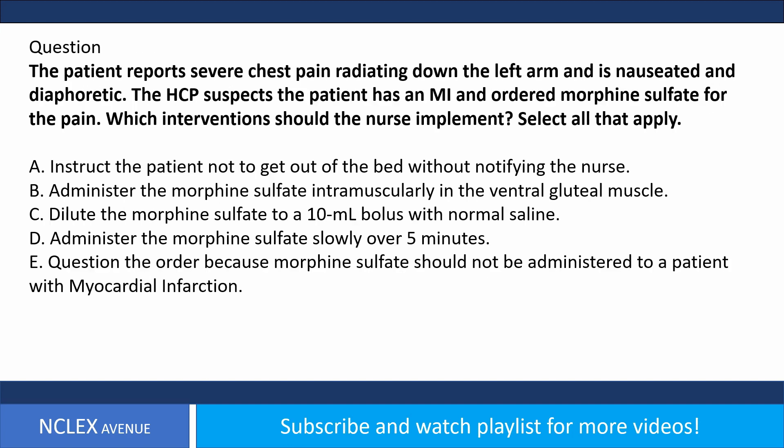Question. The patient reports severe chest pain radiating down the left arm and is nauseated and diaphoretic. The HCP suspects the patient has an MI and ordered morphine sulfate for the pain. Which interventions should the nurse implement? Select all that apply. A. Instruct the patient not to get out of bed without notifying the nurse. B. Administer the morphine sulfate intramuscularly in the ventral gluteal muscle. C. Dilute the morphine sulfate to a 10 ml bolus with normal saline. D. Administer the morphine sulfate slowly over 5 minutes. E. Question the order because morphine sulfate should not be administered to a patient with myocardial infarction.